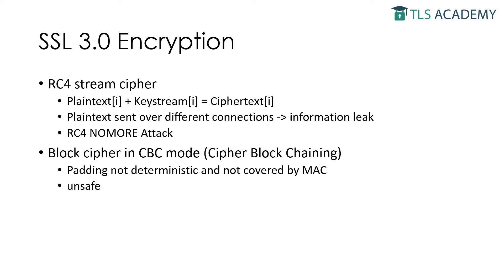The second encryption method is the usage of a block cipher in CBC mode. CBC stands for Cipher Block Chaining. It is also unsafe in SSL 3.0, since the integrity of padding cannot be fully verified when decrypting, because the block cipher padding of CBC is neither deterministic nor covered by the message authentication code. The padding is appended to the message and the last byte specifies the length of the padding.